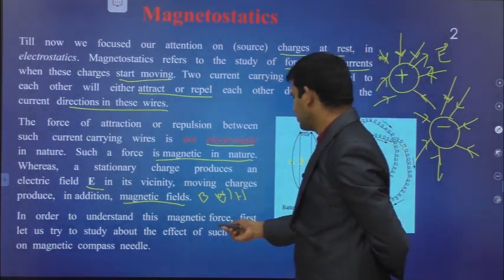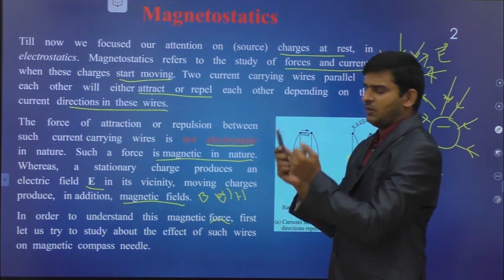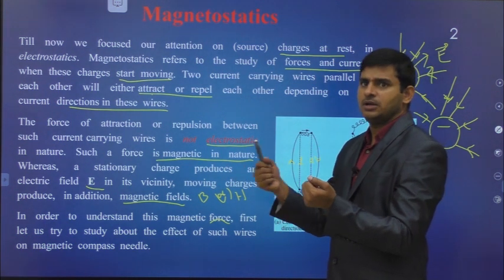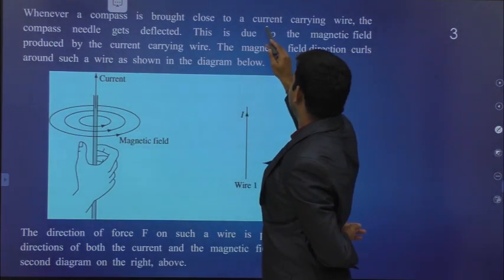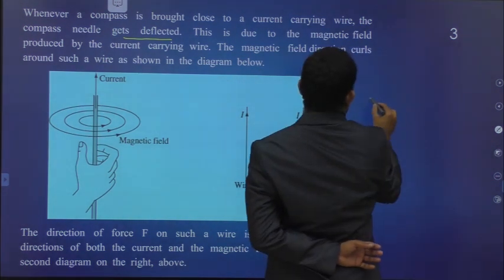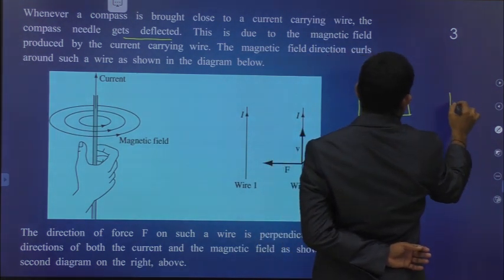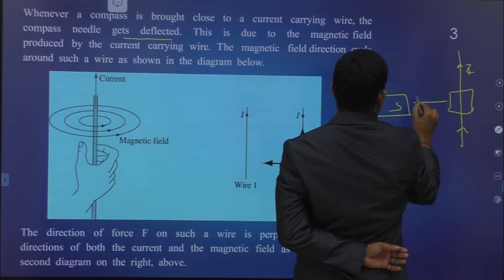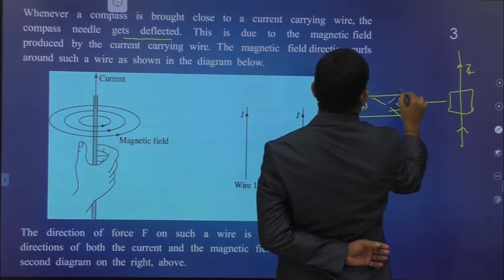In order to understand this magnetic force, let us study about the effect of such wires on a magnetic compass needle. When a compass is brought close to a current-carrying wire, the compass needle gets deflected. For example, here is the compass needle with north pole and south pole. Whenever the current-carrying wire is near to this one, then this compass will deflect, maybe like this or like this.